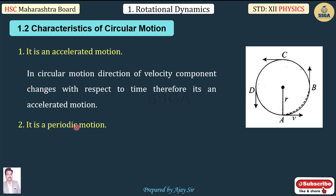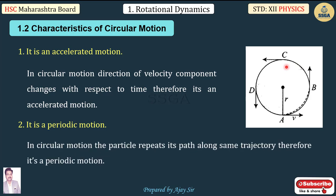Second characteristic: circular motion is periodic motion. During circular motion, the path repeats after equal intervals of time — the particle repeats its trajectory after a certain time period. Therefore, circular motion is both an accelerated motion and a periodic motion.